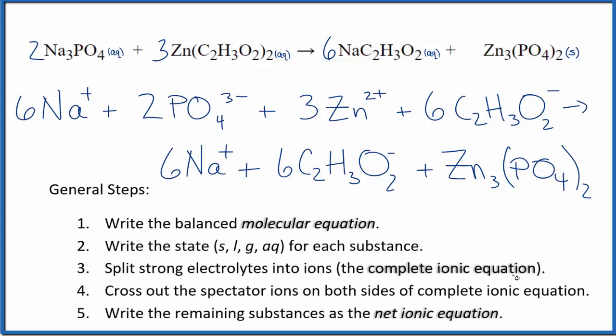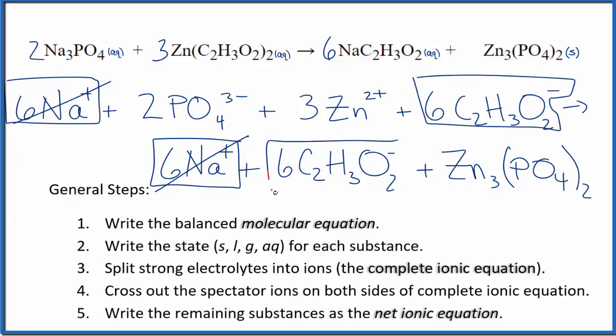Now that we have our complete ionic equation, we can cross out the spectator ions. They're on both sides. I can see in the reactants I have six sodium ions right here. In the products, I have six sodium ions. They haven't changed, let's cross those out. Then I have six acetate ions here and here. They haven't changed, cross those out.